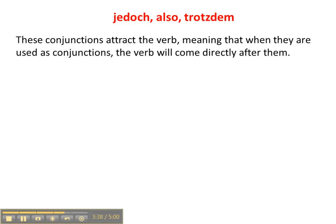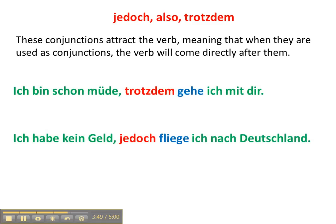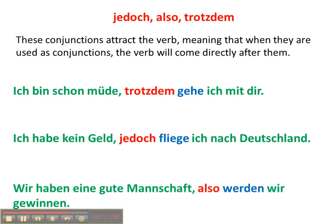One thing you also need to know is jedoch, also, and trotzdem. These conjunctions attract the verb, meaning the verb will still be directly after them. For example: Ich bin schon müde, trotzdem gehe ich mit dir — instead of trotzdem ich mit dir gehe, which would be a normal subordinating conjunction structure. Ich habe kein Geld, jedoch fliege ich nach Deutschland. Also, wir haben eine gute Mannschaft, also wir werden gewinnen.